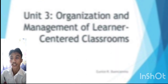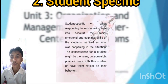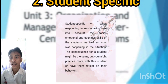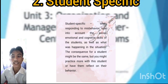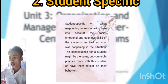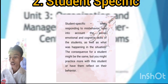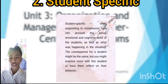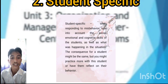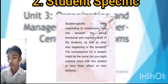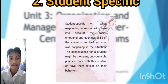The next topic is student-specific. When responding to misbehavior, take into account the social, emotional, and cognitive skills of the student as well as what was happening in the situation. The consequence for the students might be the same, but you may practice more with these students or help them reflect on their behavior. The teacher should consider if there is a valid reason for the student's behavior and be specific when it comes to disciplinary action.